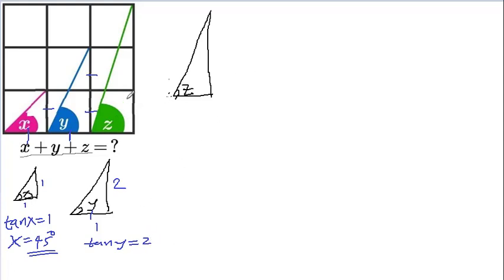And for this angle z, you can see this is one unit here. But this is one, two, three units. So this is three units here. So the tan of z is 3 over 1 units, which is three units.